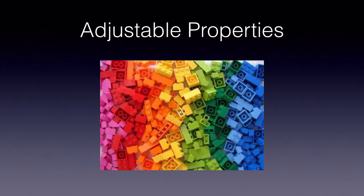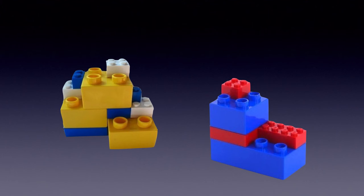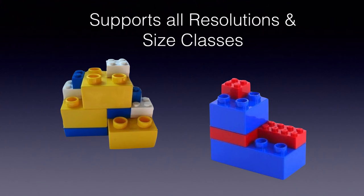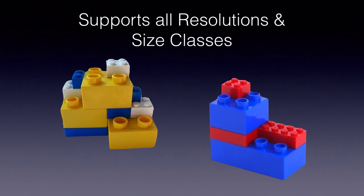You can change properties — you can change the colour, swap them out, change how long it is, swap them out. Surprisingly, Lego already supports multiple resolutions and all size classes. You can get basic Lego and attach it to Duplo, which is for toddlers, and the two just connect. When they thought about the engineering of these blocks, they already made them work on all different size classes.